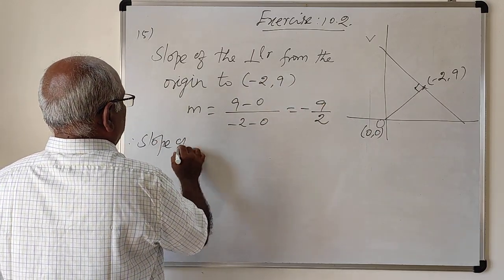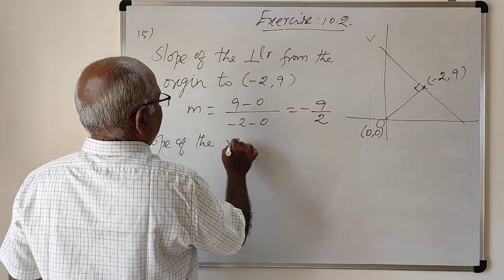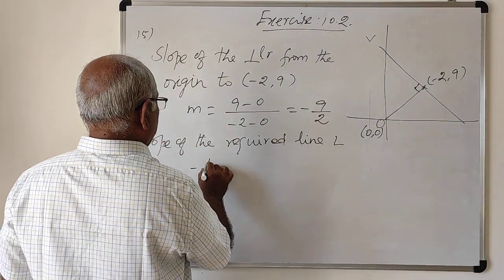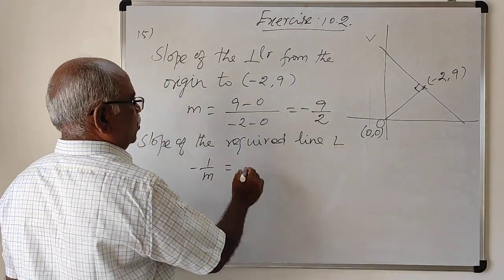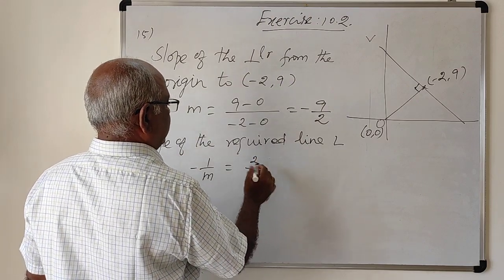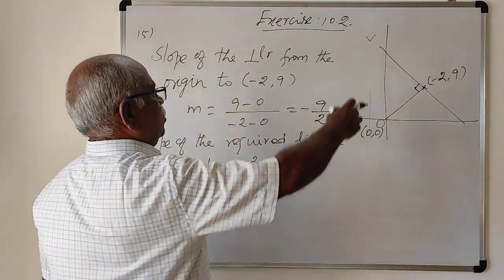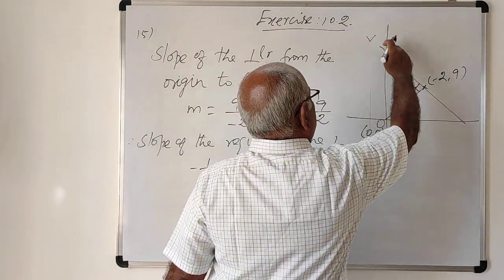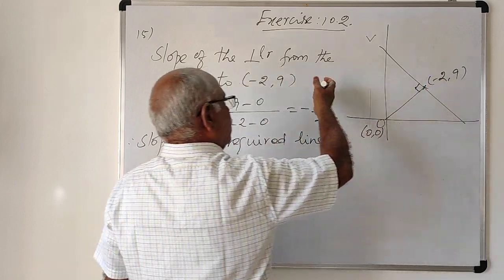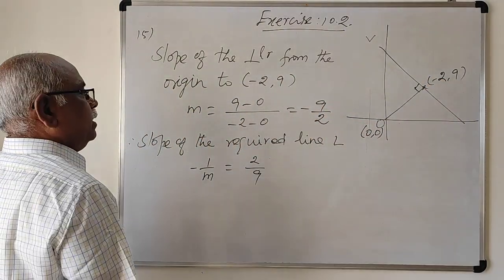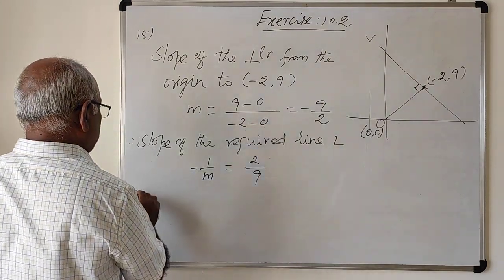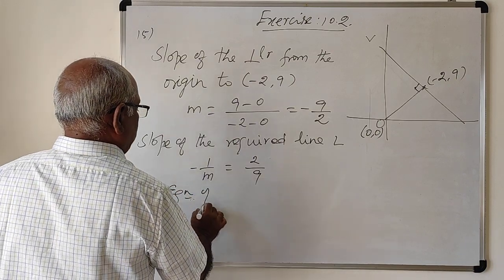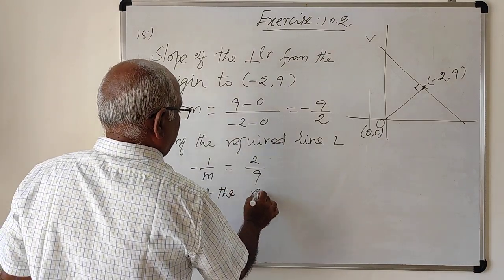Therefore the slope of the required line L is the negative reciprocal of -9/2, which is 2/9. The required line passes through the point (-2, 9) also. Therefore we find the equation of the required line.